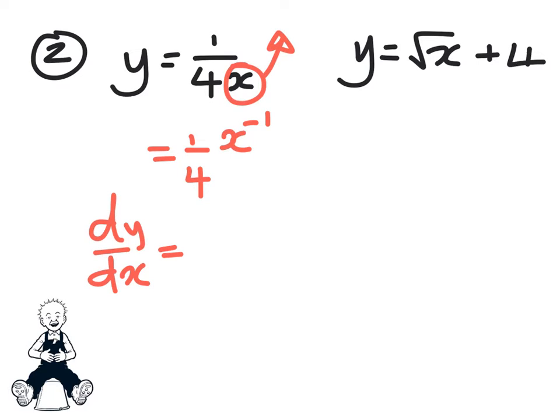For the second one, same thing. Got a little bit of a problem with the root x, so we need to rewrite that first of all. So we're going to write that as x to the power of half. Just keep the 4 as a 4.